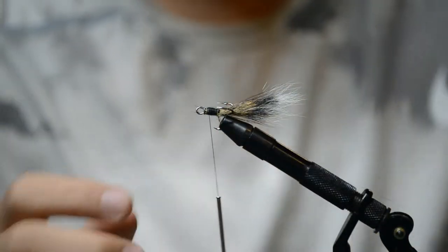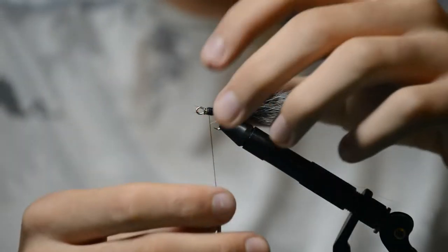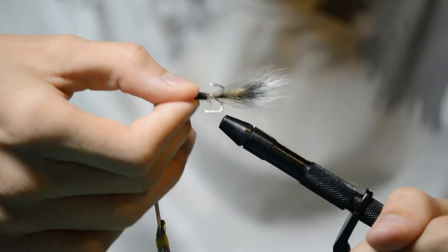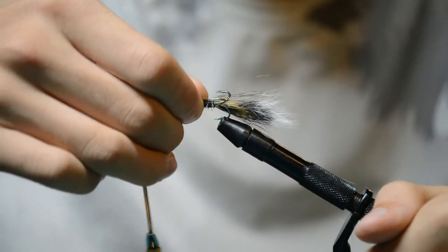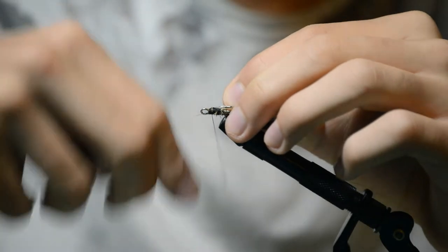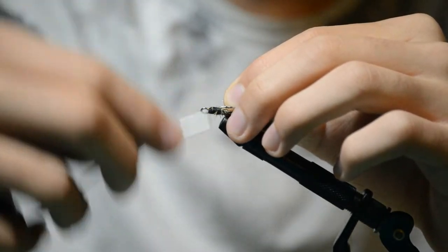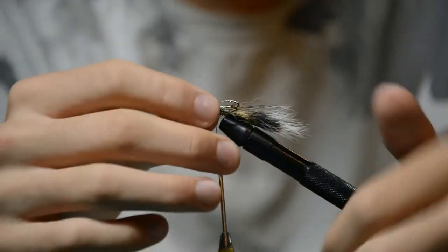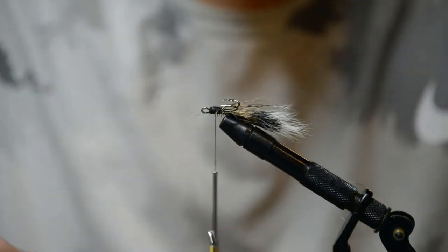Now with the rotary vise you'd be able to spin it, but since I don't have a rotary vise, what I'll do, you just take this out real quick and just flip it, flip the hook, clamp it shut. A few more wraps to cover up some of that squirrel hair, make sure that's tight. And then you take about another one of the stacks of squirrel hair.